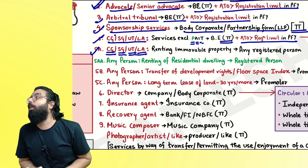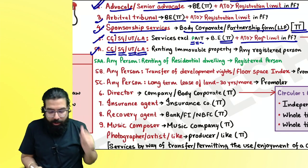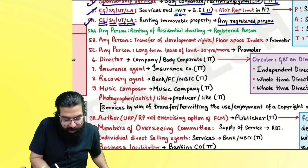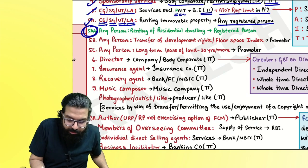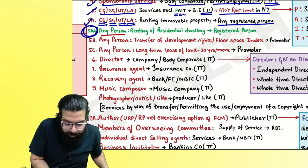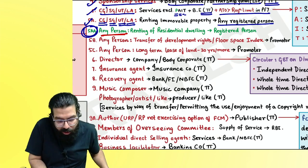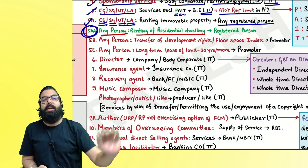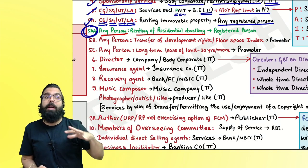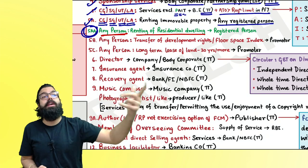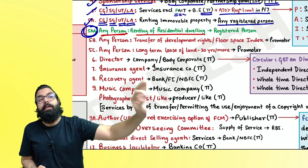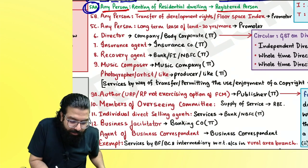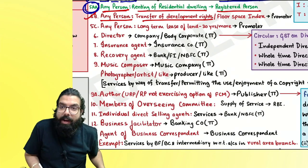If central government, state government, union territory, or local authority gives renting of immovable property services, the registered person pays GST under RCM. A new entry: if any person rents a residential house to an unregistered person, no GST. But if renting to a registered person, the registered person pays GST under RCM.